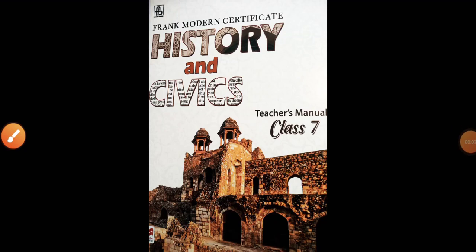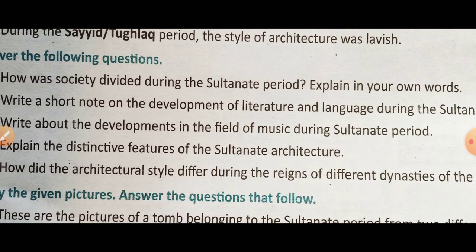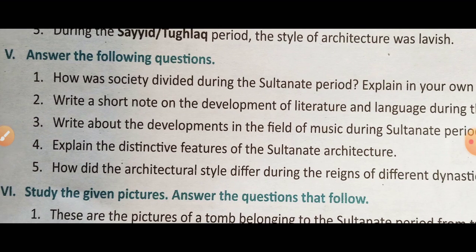Dear modern stars, today you will write question number 5 of chapter 7. Chapter name is 'Life During the Sultanate Period.' You will write question and answer for question number 5.